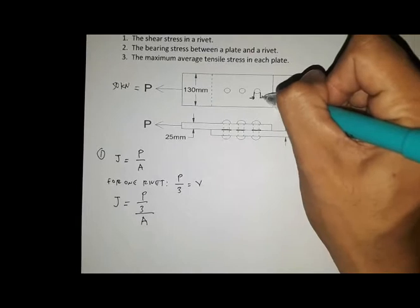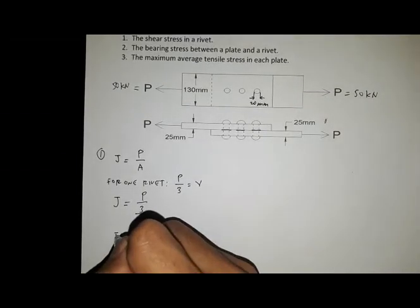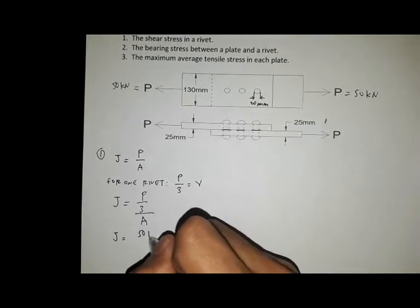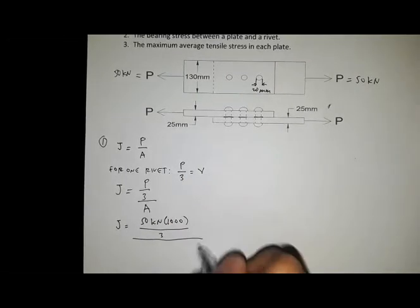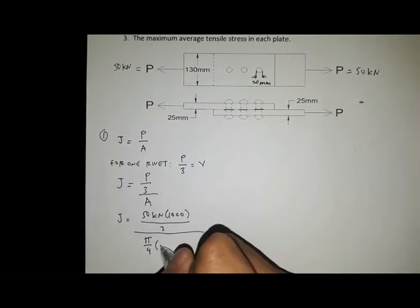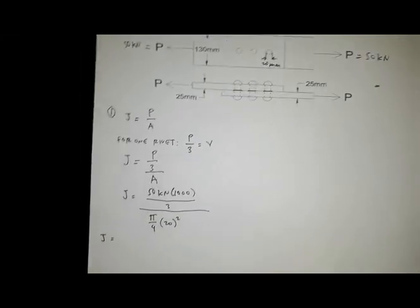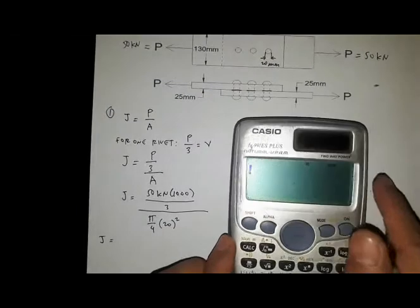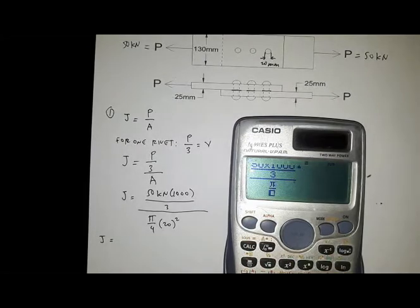The diameter of the rivet is 20 millimeters. By substitution, shear stress equals 50 kilonewtons multiplied by 1,000 divided by 3, over the area pi over 4 times diameter squared. So we have shear stress equals 50 times 1,000 divided by 3, over pi over 4 times 20 squared.